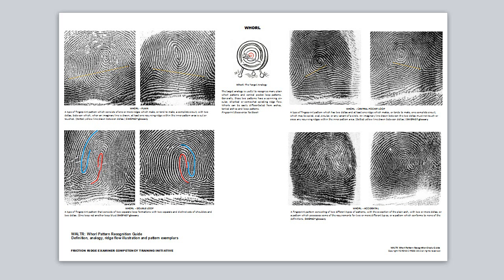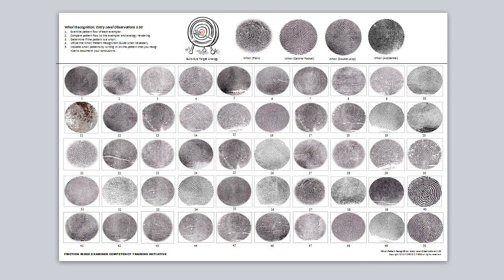Now you should be getting your whirl pattern recognition guide along with the quiz I made for this assignment. Like in the other quizzes, you'll indicate a capital W for whirl, an A for arch, T for tented arch, and an L for loop on each of these. In this process, you will now have the recognition ability to determine the pattern types of these fingerprint patterns. I want you to just watch this quick video that explains so well the target analogy — and good luck with the exercises.